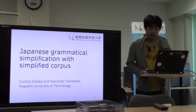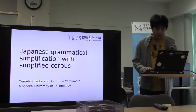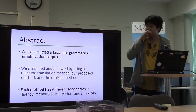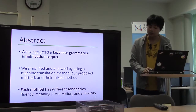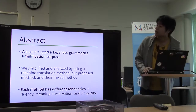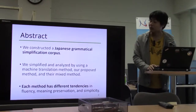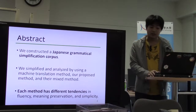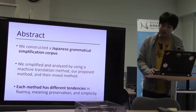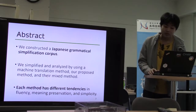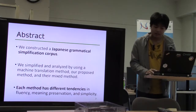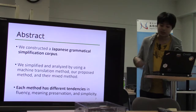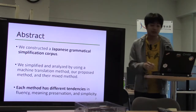Today, we'd like to talk about this title. We'll explain the abstract. For Japanese grammatical simplification, we construct a simplification corpus, and we compare three methods: the machine translation approach, our proposed method, and a mixed method. As a result, each method has different tendencies — for example, in meaning preservation and simplicity.